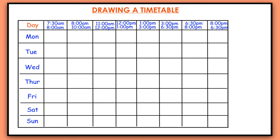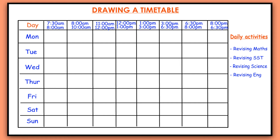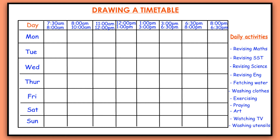I'm going to assume I am a pupil who goes to school and is on holidays. I'll make a timetable that includes activities like revising math, revising social studies, revising science, and revising English — those are the subjects I study in school. Other activities include fetching water, washing clothes, exercising, praying, doing art, watching television, and washing utensils. Those are the activities I'm going to include in my timetable.